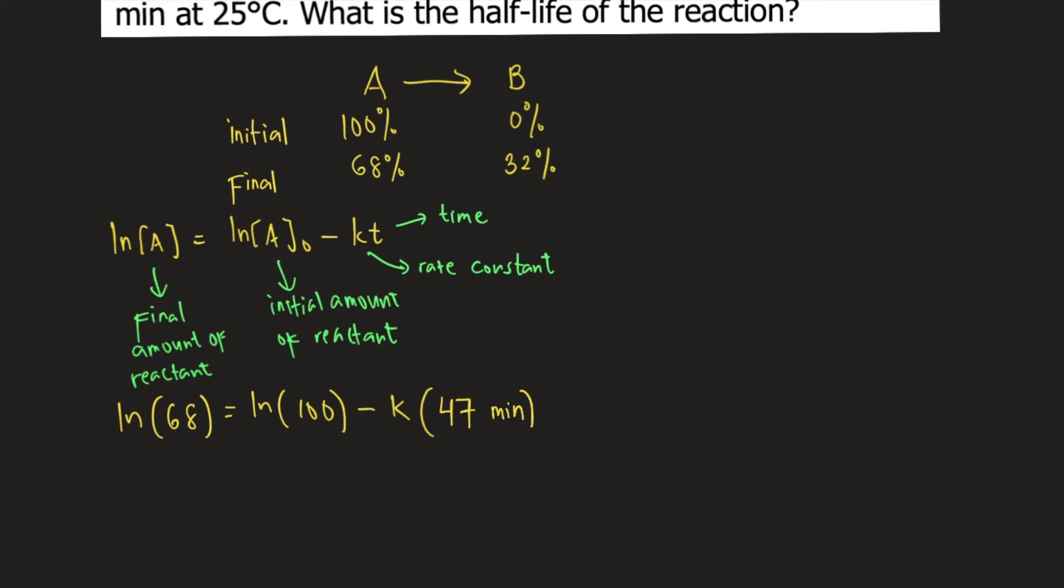Looking at the reaction, the missing variable is K, so we can solve for K. What you need to do is transfer ln 100 to the left side. So the equation becomes ln 68 minus ln 100 is equal to negative K times 47 minutes.